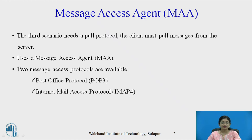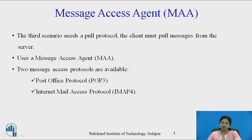We have seen four scenarios in email architecture. The first two scenarios use the SMTP protocol to send mail from client to server. In the third scenario, SMTP protocol is not used because SMTP is a push protocol, which pushes the message from the client to a server. Whereas in the third scenario, a pull protocol is required — the client must pull the messages from the server. To pull these messages from the mail server, we require the message access agent.